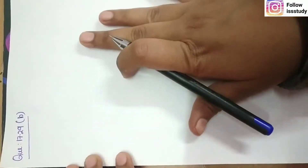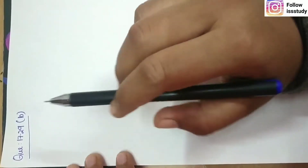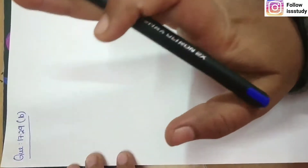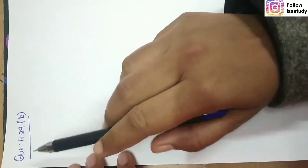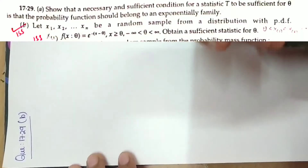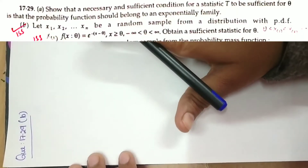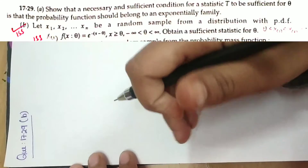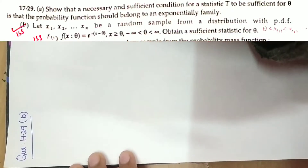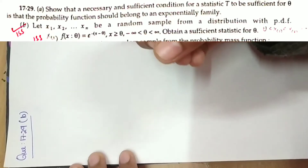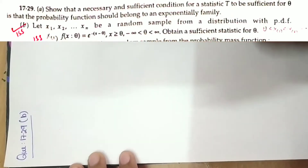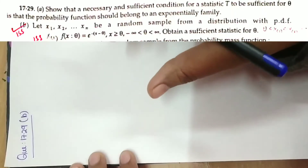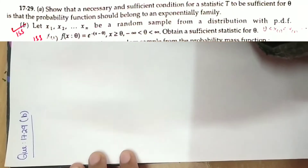Hello everyone, hope you all are doing good. Today in this video we will discuss question 17.29 of chapter 17 from book Gupta and Kapoor. This question has basically two parts. I suggest you should learn part A, because part A asks to show that the necessary and sufficient condition for a statistic T to be sufficient for theta is that the probability function should belong to an exponential family.